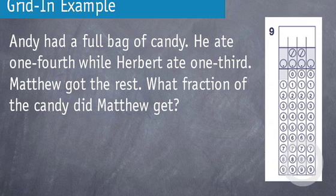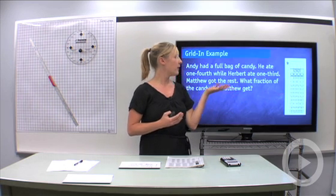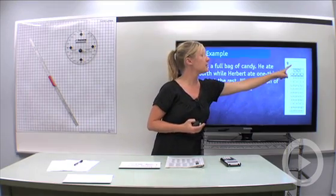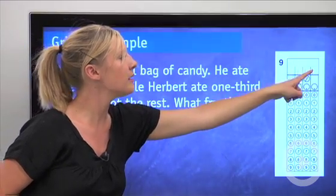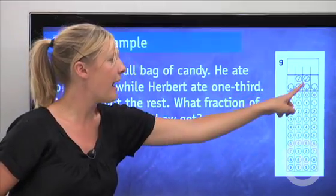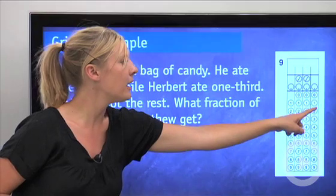Here's an example. What you're going to have is you're going to have a question, but no answer choices. You're going to be required to solve the answer and then to fill it in in this special grid-in box. So for example, the answer to this question is 5 twelfths. So what you would do is you would simply write at the top 5 slash 1 2 and then bubble in the numbers accordingly. You'd bubble in 5, the slash, 1, and 2.